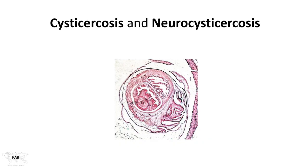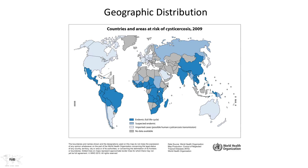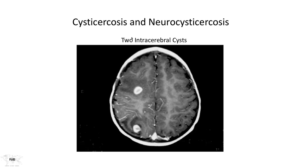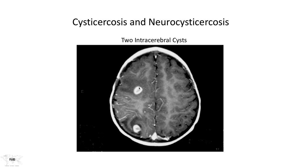Let's begin with cysticercosis and neurocysticercosis as caused by the larval form of Taenia solium. The geographic distribution of Taenia cysticercosis reflects the distribution of pig husbandry throughout the world and can result in very serious infection. The term neurocysticercosis is applied to the cysticercoid stage of the parasite when it has lodged itself in neurologic tissues, which can occur throughout the central nervous system. Shown here are two lesions caused by penetration of neurologic tissue by the cysticercosis stage.